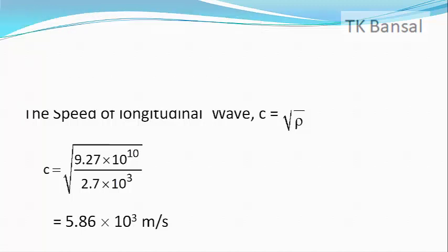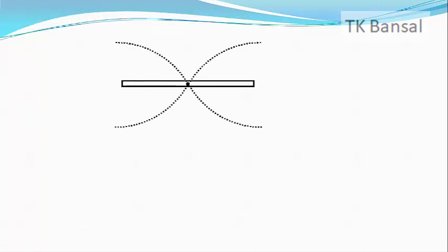In the given problem, the rod is clamped at the middle. Therefore, the middle point should be a node whereas the two ends are free to vibrate and must therefore be anti-nodes.